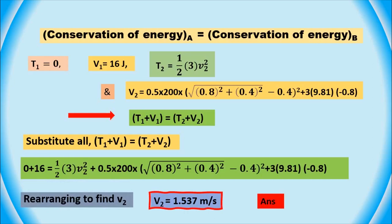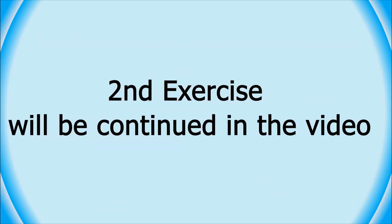Therefore, the velocity of the slider as it reaches point B in the absence of friction is 1.537 meters per second.